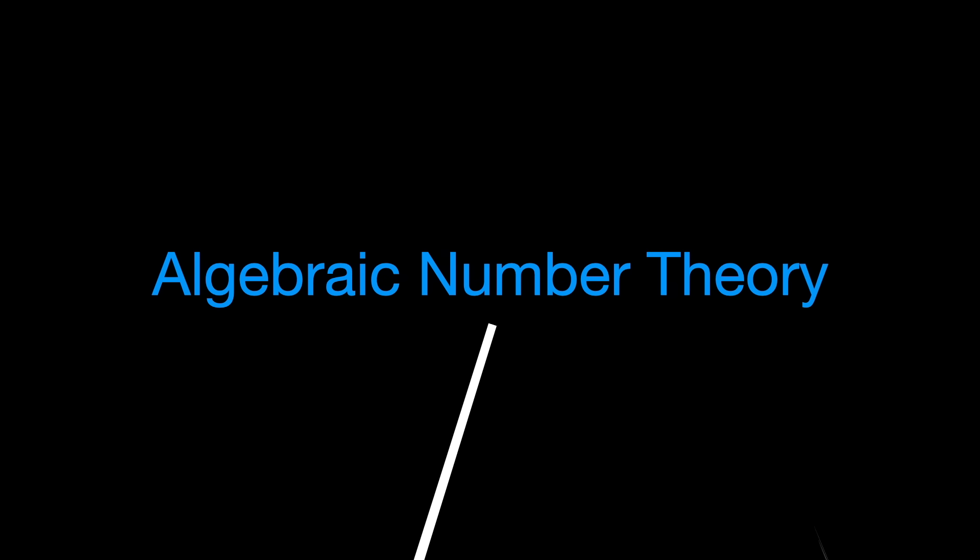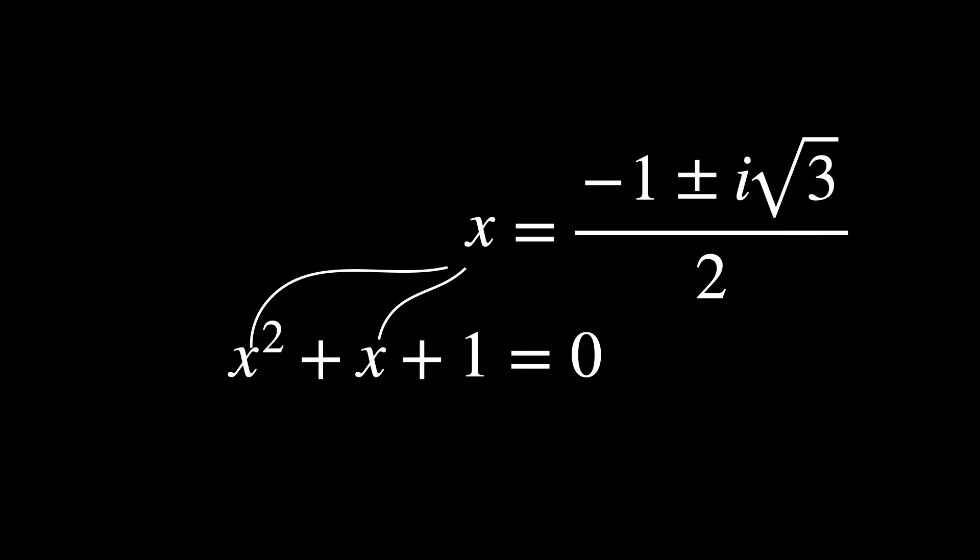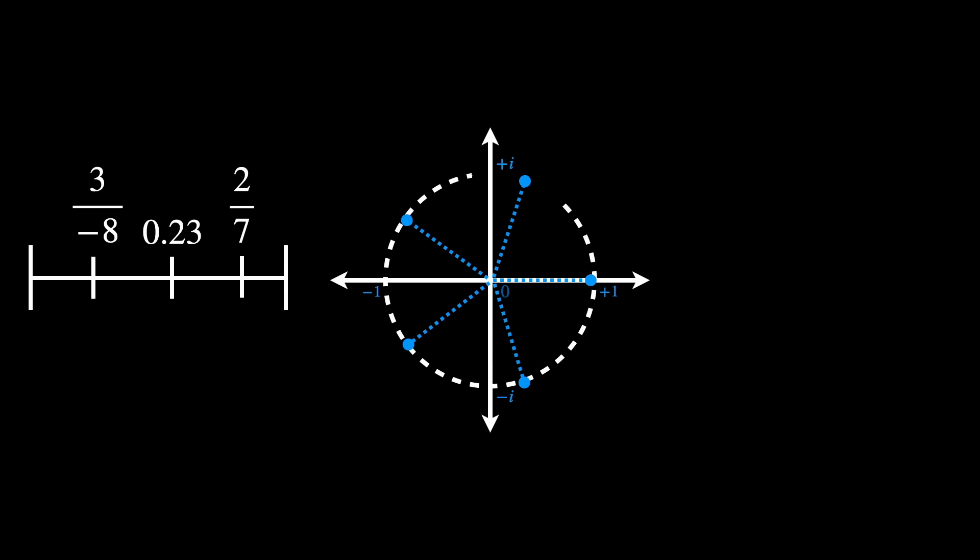Algebraic Number Theory. This branch explores the properties and relationships of complex numbers that satisfy polynomial equations with integer coefficients. Algebraic numbers include all rational numbers, roots of unity, and solutions to polynomial equations like this one, where the coefficients are integers.